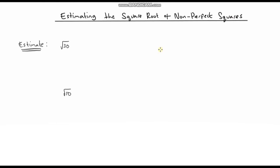Hello and welcome to another video on estimating. In this video we're going to look at estimating the square root of non-perfect squares. In the previous video we came up with a general rule for estimating: when we wanted to estimate a calculation we could round each number to one significant figure. But when estimating the square root of non-perfect squares, we're going to use a slightly different technique.